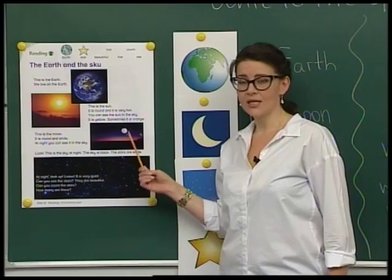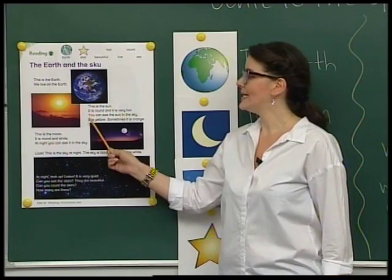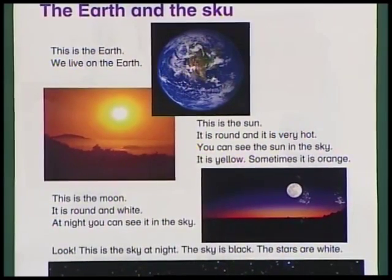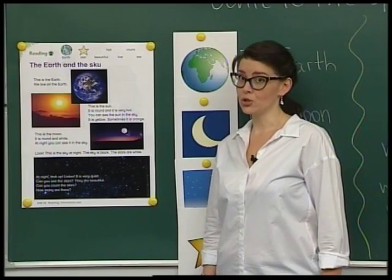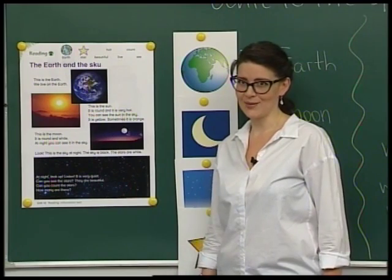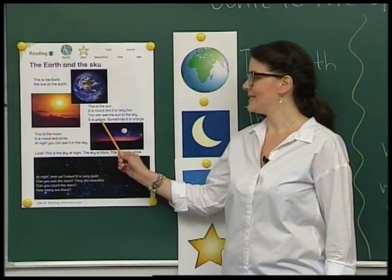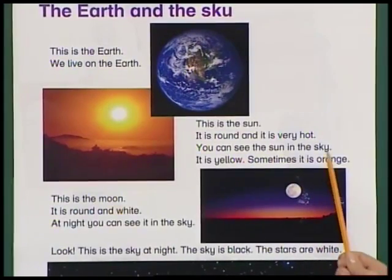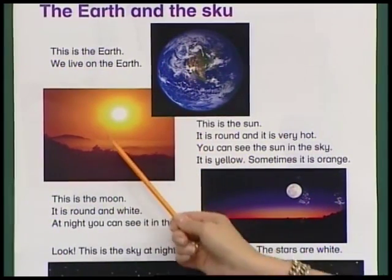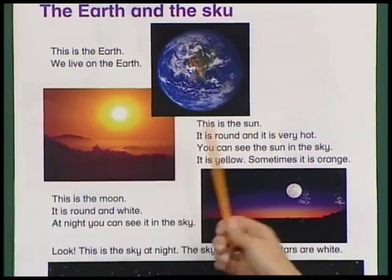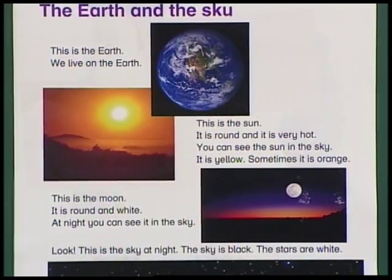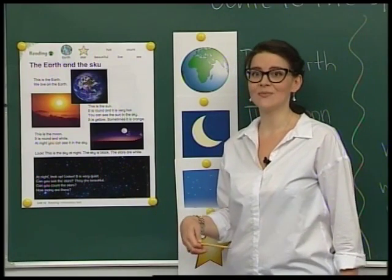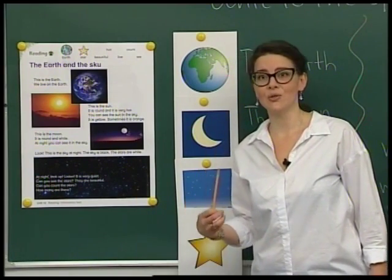What color is the Sun? It is yellow. But sometimes it's orange. So, the Sun is round. It is very hot. Sometimes it's yellow and sometimes it is orange.